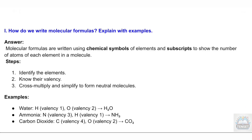L. How do we write molecular formulas? Explain with examples. Answer: Molecular formulas are written using chemical symbols of elements and subscripts to show the number of atoms of each element in a molecule. Steps: identify the elements, know their valency, cross multiply and simplify to form neutral molecules.